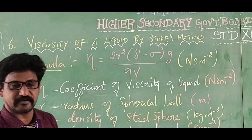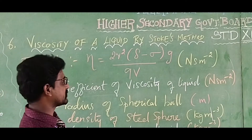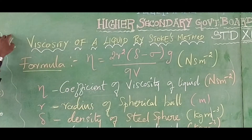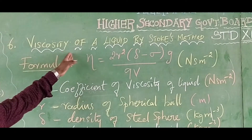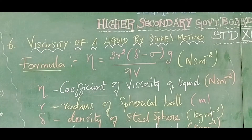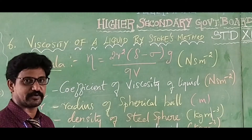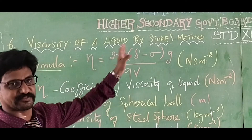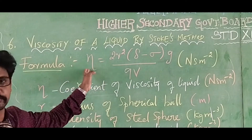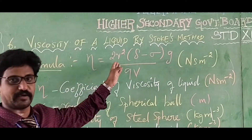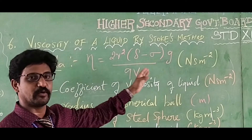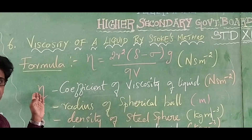Welcome to physics practical. Today let us be discussing experiment 6: viscosity by Stokes method. The aim of this experiment is to determine the coefficient of viscosity of a liquid using Stokes method. The formula is given as eta equals 2r squared into (rho minus sigma) into g divided by 9v.